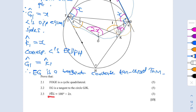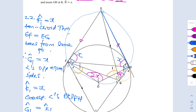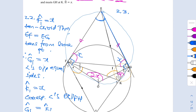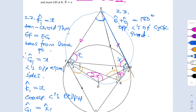Question 2.3: prove that angle FEG equals 180 minus 2x. We have already proved that FOGE is a cyclic quadrilateral, so opposite angles are supplementary. Therefore angle E plus angle O1 equals 180 degrees. Since angle O1 equals 2x, angle E equals 180 minus 2x.